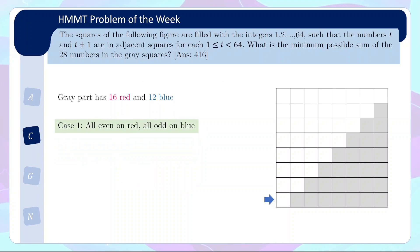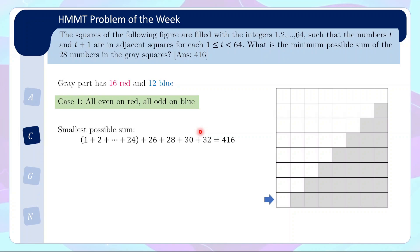Let's take a look at the first case where all even on red and all odd are on blue. Then the smallest sum in this case, if you have 16 red and 12 blue, you realize you cannot fit 1 to 28. But the smallest sum is if you take all the numbers from 1 to 24 which fills up 12 blue and 12 red, and then the next 4 reds are the next 4 smallest even numbers. These will already give you a sum of 416. So under case 1, you cannot get a number smaller than 416.